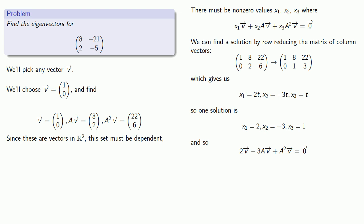And so we know that 2v - 3Av + A²v is equal to the zero vector. And I'll rearrange that a little bit. So we know that A²v - 3Av + 2v is the zero vector.